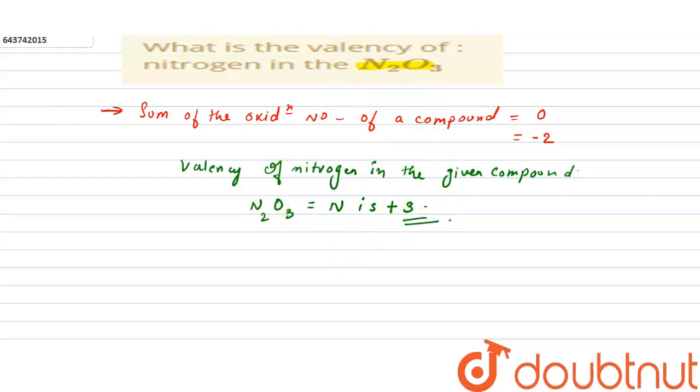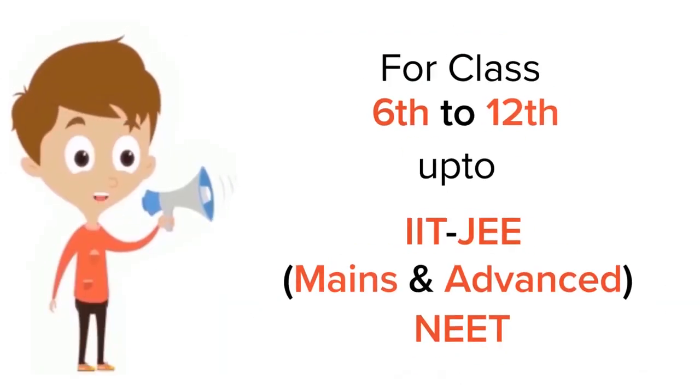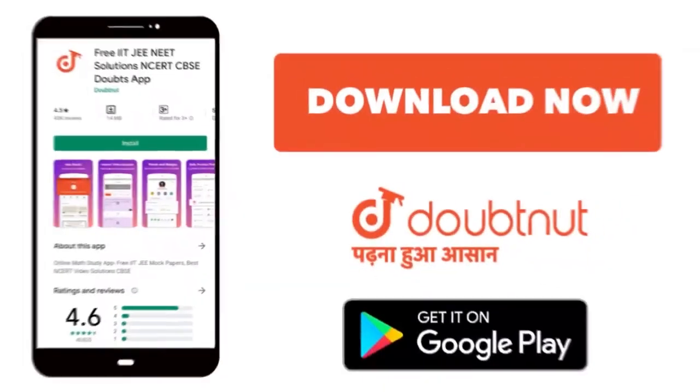Okay, so this is our correct answer for the given question. For class 6th to 12th, IIT-JEE and NEET level, trusted by more than five crore students. Download Doubtnut app today.